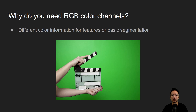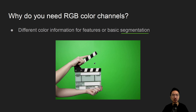Why do you need RGB color channels? Different colors usually give you different information. Later when we talk about HSV color channels, we'll see a nice way to segment images. Segmentation is a common task — for example, green screen uses basic color segmentation. Green is used because it's not a common color in most people's skin tone, hair, or clothing, making it easy to segment out the background.